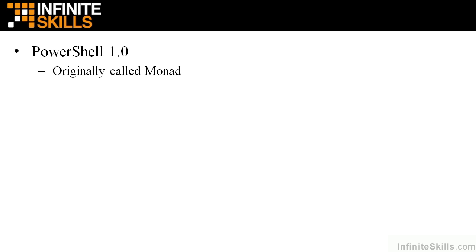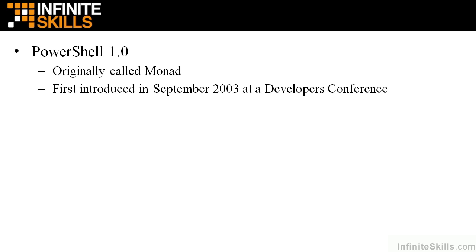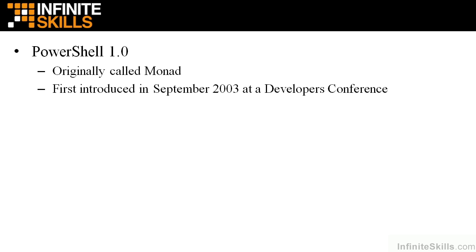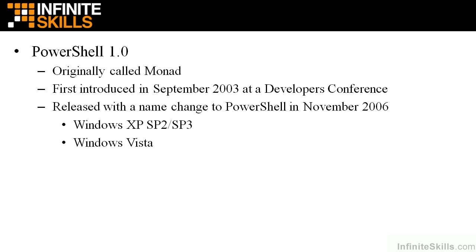PowerShell first appeared officially as PowerShell 1.0. It was originally called Microsoft's Monad project, first introduced as Monad back in September 2003 at a developers conference. When it was finally released in November 2006, the name was changed to PowerShell. When it was first released, it was intended for use with Windows XP Service Pack 2 or Service Pack 3, it was part of Vista, and it was part of Windows Server 2003.